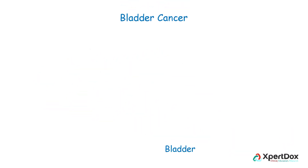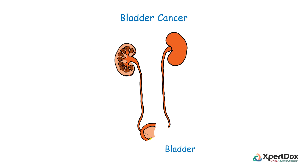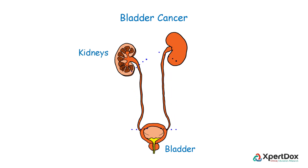The bladder is a balloon-like organ with a muscular wall in the lower part of the abdomen. It holds the urine made by the kidneys until it passes through the urethra and leaves the body.